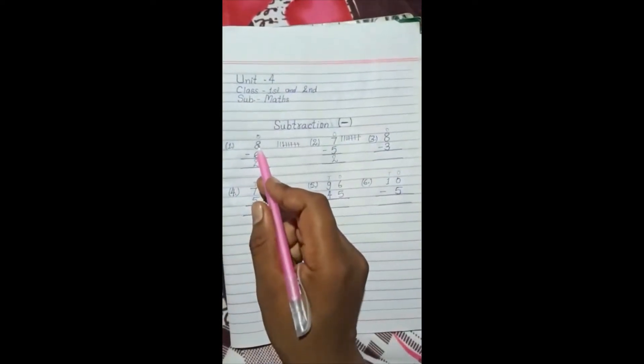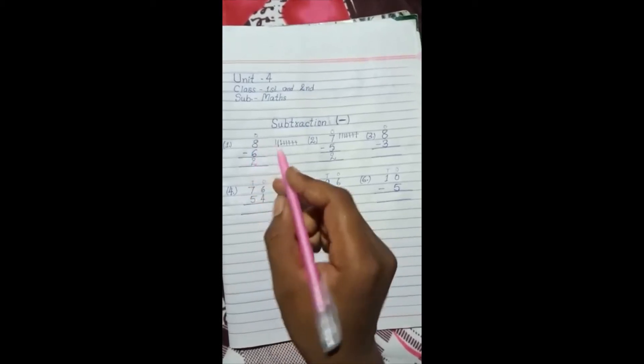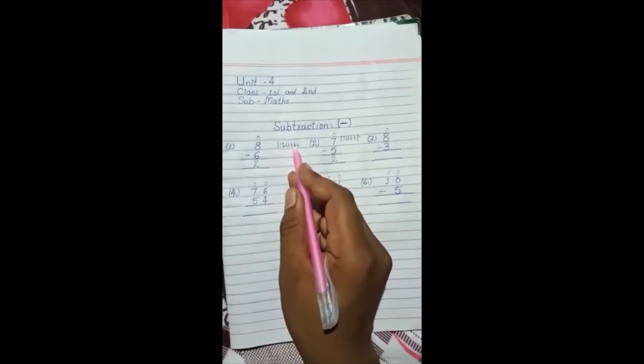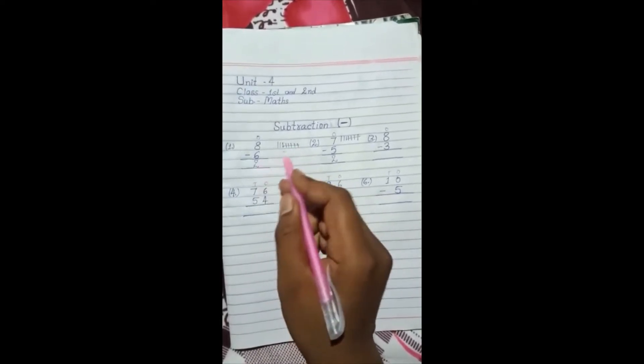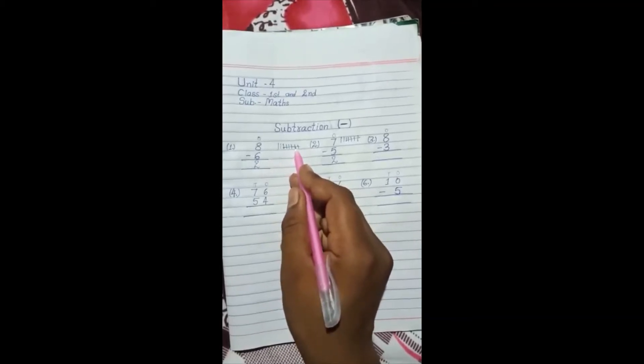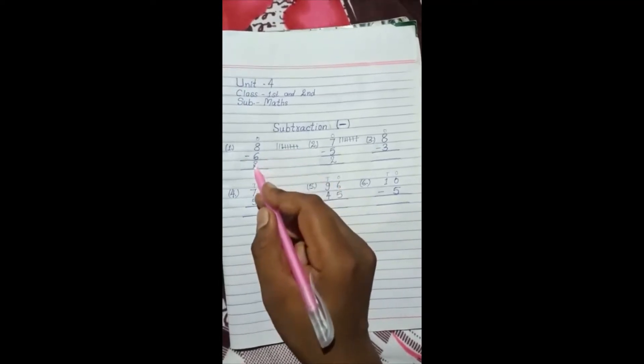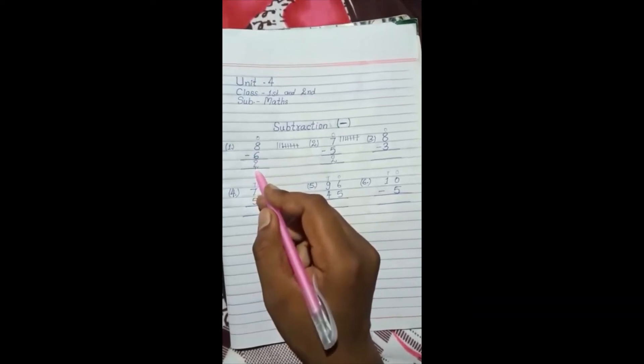8 minus 6. O means once. We'll draw 8 lines: 1, 2, 3, 4, 5, 6, 7, 8. From these, we'll cross out 6 by counting: 1, 2, 3, 4, 5, 6. How many remain? 2. 1, 2. So we write here 2. 8 minus 6 is equal to 2.